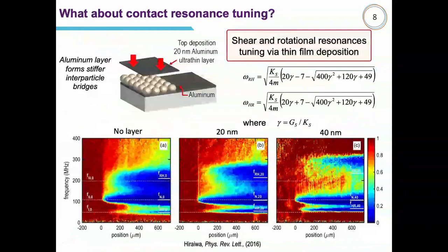We started looking at ways to tune and control these spring stiffnesses. They are contact-based resonances, very sensitive to any contact between spheres. One approach was adding thin aluminum layers on top of the monolayer, which stiffened the interparticle spring connecting the spheres. This resulted in an upshift of the shear and rotational modes but the normal mode remained unchanged — a way to identify and tune these resonances via nano contact tailoring.